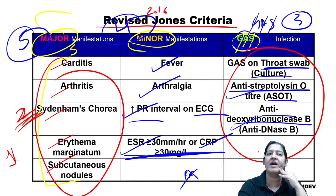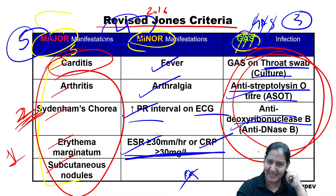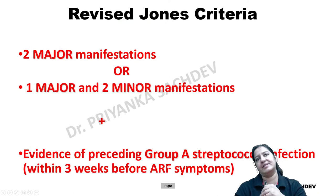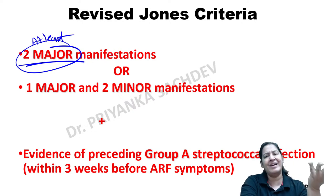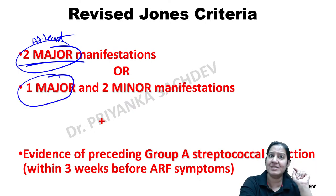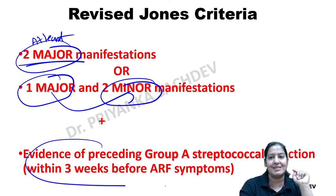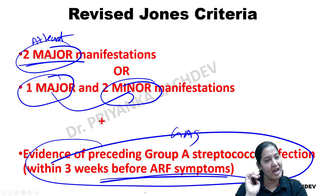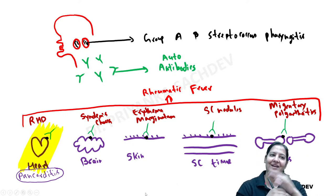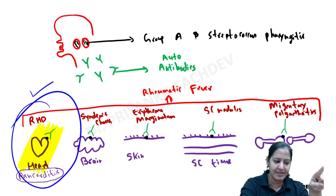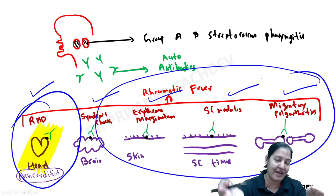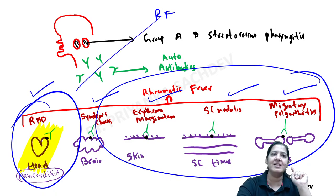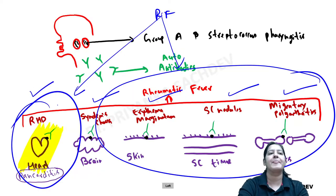If carditis alone is present as one major criterion along with GAS criteria, look for at least two minor criteria. The five extracardiac manifestations of rheumatic fever are: Sydenham's chorea, erythema marginatum, subcutaneous nodules, and migratory polyarthritis. The cardiac manifestation is rheumatic heart disease. These four are extracardiac; the cardiac manifestation is the most important.